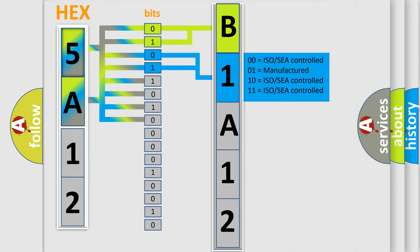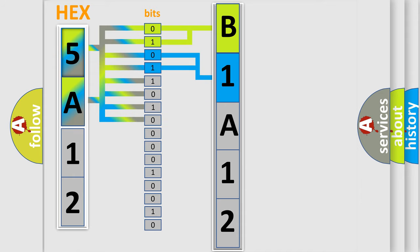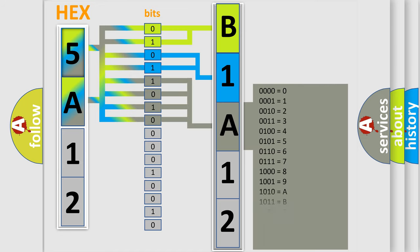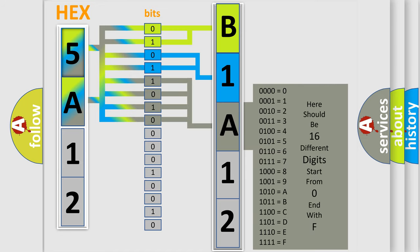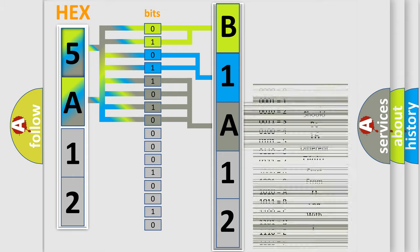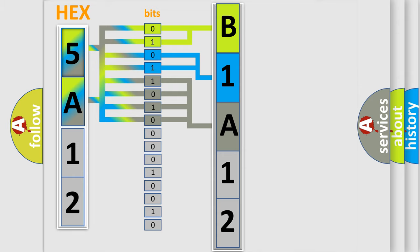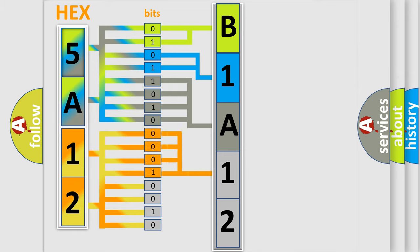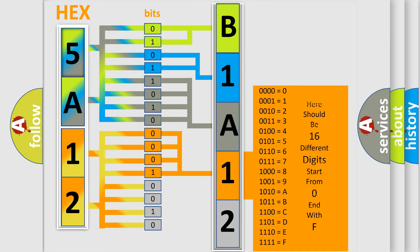The last four bits of the first byte define the third character of the code. The second byte is composed of a combination of eight bits. The first four bits determine the fourth character of the code, and the combination of the last four bits defines the fifth character.